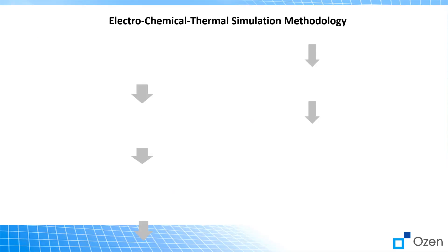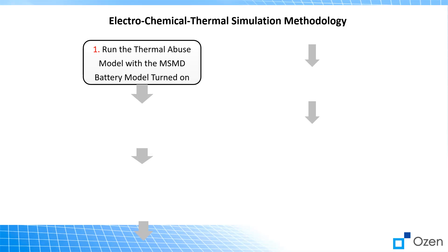Once we have that displacement damage to the battery, there are several steps to simulate the electrochemical thermal simulation part of this problem. Step one is to run the thermal abuse model with the MSMD battery model turned on. This portion is done in Fluent — one of the battery models that Fluent has. For this example we're going to show you how to run the MSMD battery model.